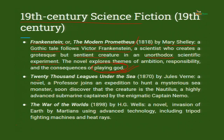20,000 Leagues Under the Sea by Jules Verne — a novel. A professor joins an expedition to hunt a mysterious sea monster and soon discovers that the creature is the Nautilus, a highly advanced submarine captained by the enigmatic Captain Nemo. Jules Verne talks about a professor who gathers a crew and goes in search of a sea monster sighted in many places. Later on, they discover it is not a sea monster — it is a highly advanced submarine moving from one place to another, captained by somebody called Captain Nemo.